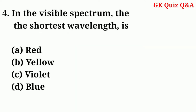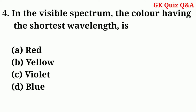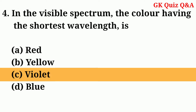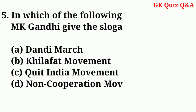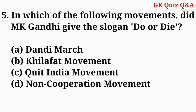In the visible spectrum, the color having the shortest wavelength is — Answer: C — Violet.